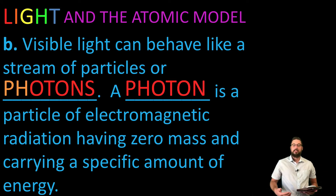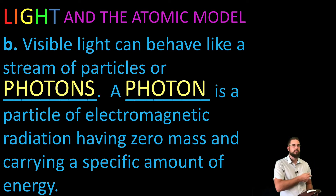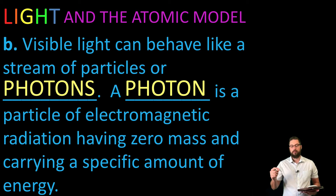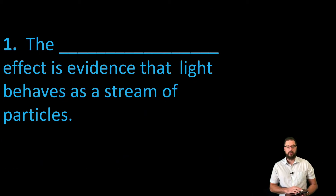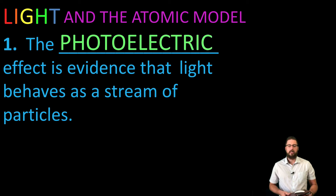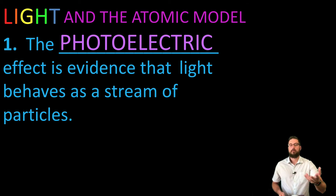Visible light can also behave like particles, and we call those particles photons. A photon is a particle of electromagnetic radiation — it has zero mass but carries a specific amount of energy. The photoelectric effect is evidence that light behaves like particles. So light has that wave-particle duality: it behaves like both a wave and a particle.